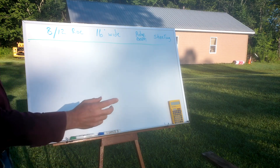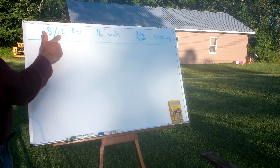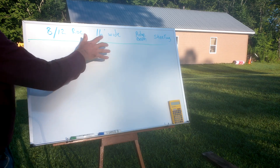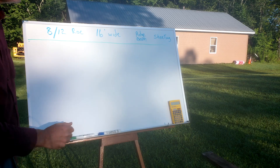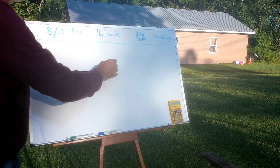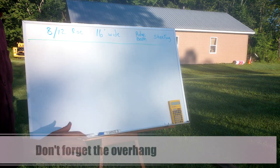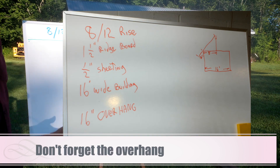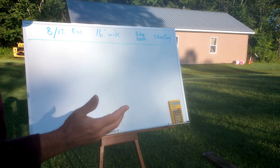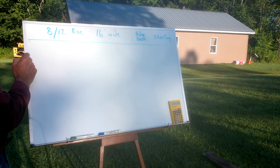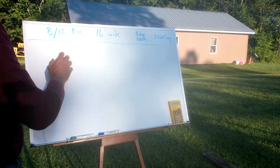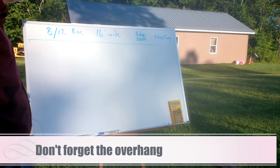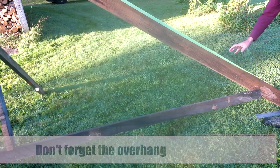For this example we've got an 8/12 rise, the building is 16 feet wide, we have a ridge beam and sheeting. That's all you need to know — an 8/12 rise, 16-foot wide building, a ridge beam, and sheeting.